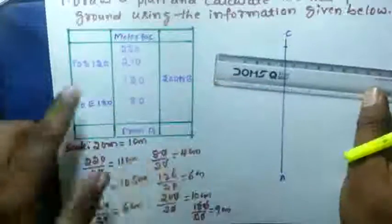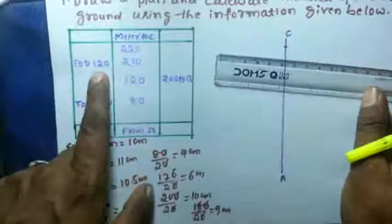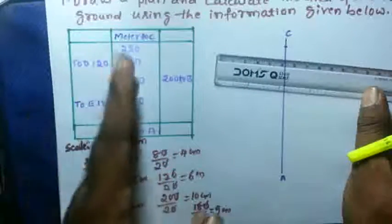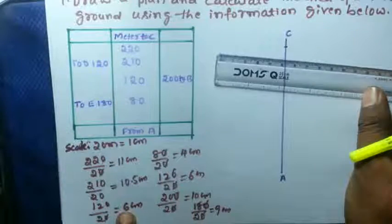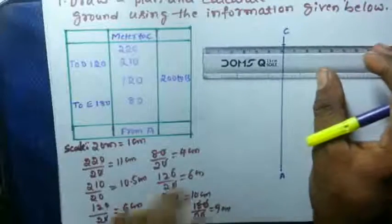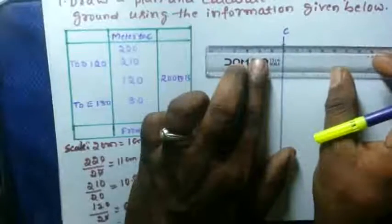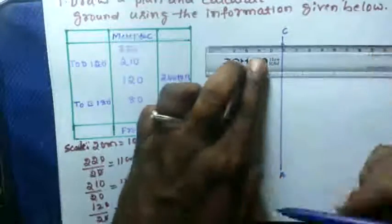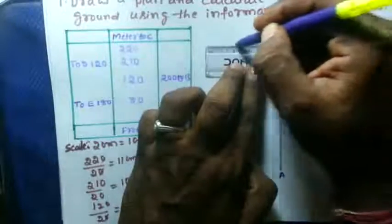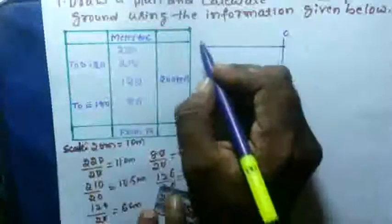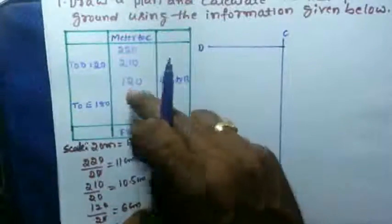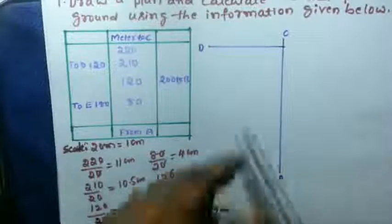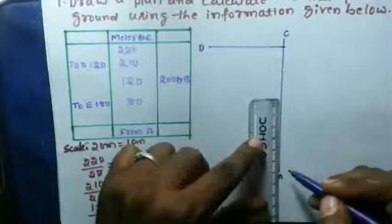And here another one is there, 120, it is from the left side the line. So 120 means it's 6 centimeter. Draw 6 centimeter left side perpendicular to this AC. This is 6 centimeter and give a name is D. Similarly for 120, 120 means 6 centimeter, so take 6 centimeter from A.